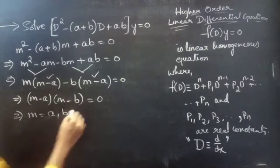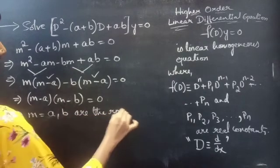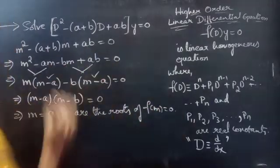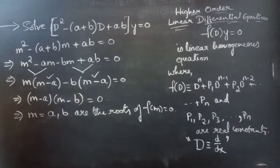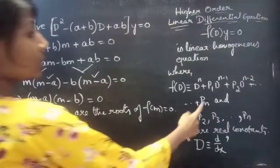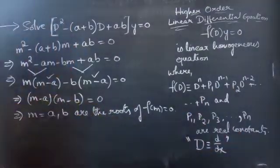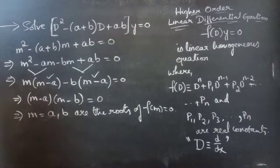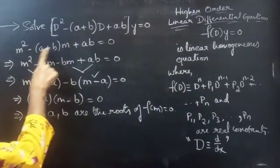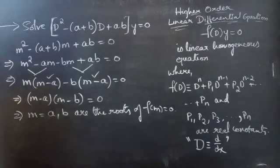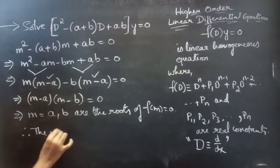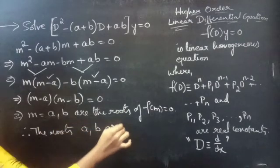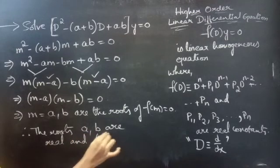So m equals a and m equals b are the roots of f of m equals to 0. The roots are a and b, which are real and distinct. Since a and b are real constants and they are distinct, therefore the roots are real and distinct.